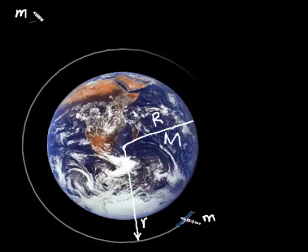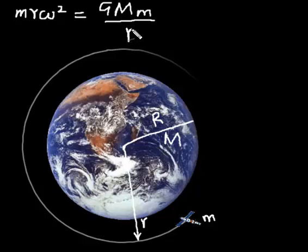The centripetal force is given by m r omega squared, where r is the radius of the orbit, omega is the angular velocity of the satellite, and m is the mass of the satellite. The centripetal force is provided by the gravitational pull on the satellite by the Earth. Gravitational force on the satellite by the Earth is given by this equation: GMm over r squared.